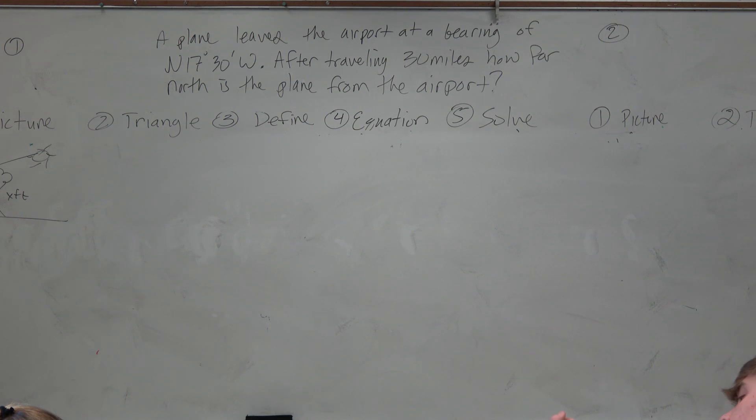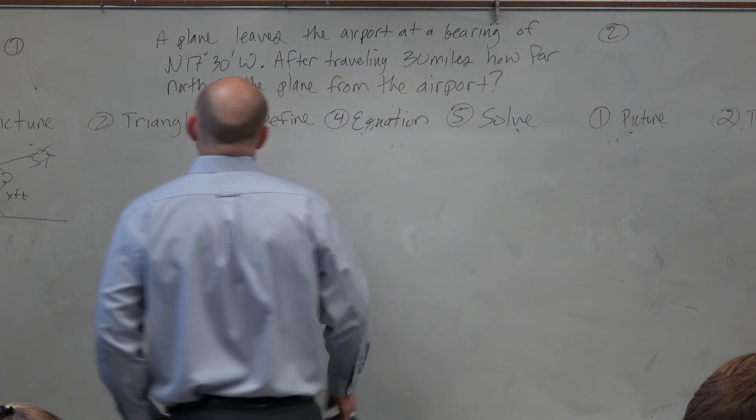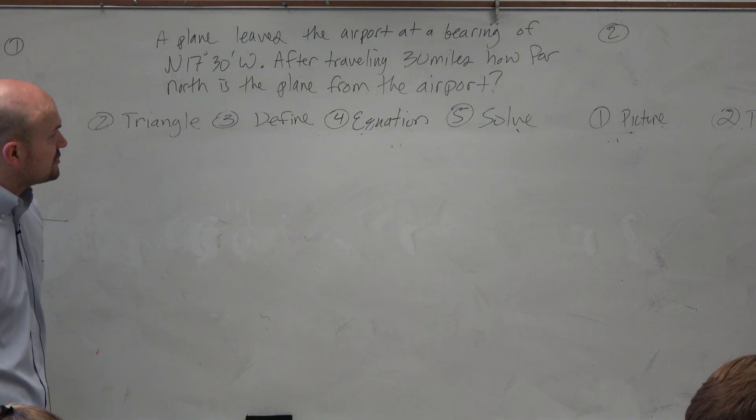All right. So in this example, guys, it says a plane leaves the airport at a bearing of north 17 degrees 30 minutes west. After traveling 30 miles, how far north is the plane from the airport?